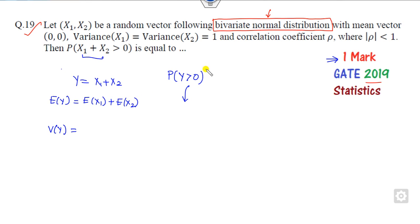You always try to solve such kind of questions whenever they are asked about the probability in this manner. What is the expected value of x1 and x2? They are given to be 0, so the answer is 0.